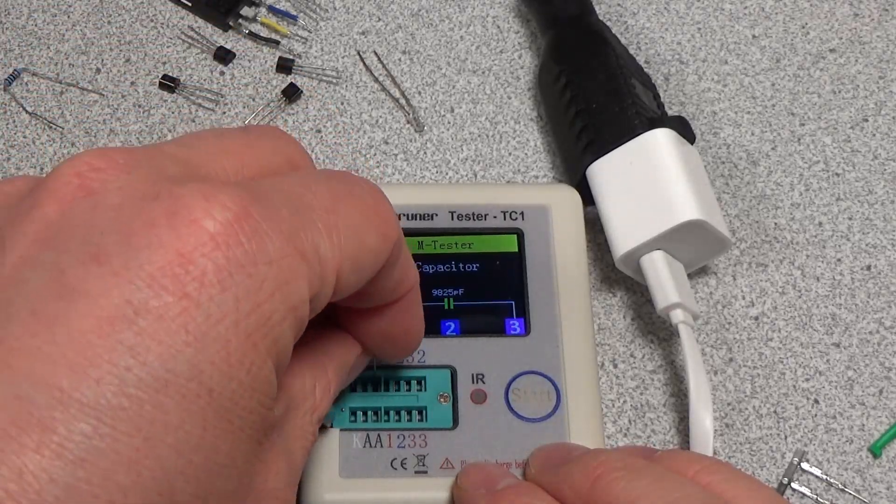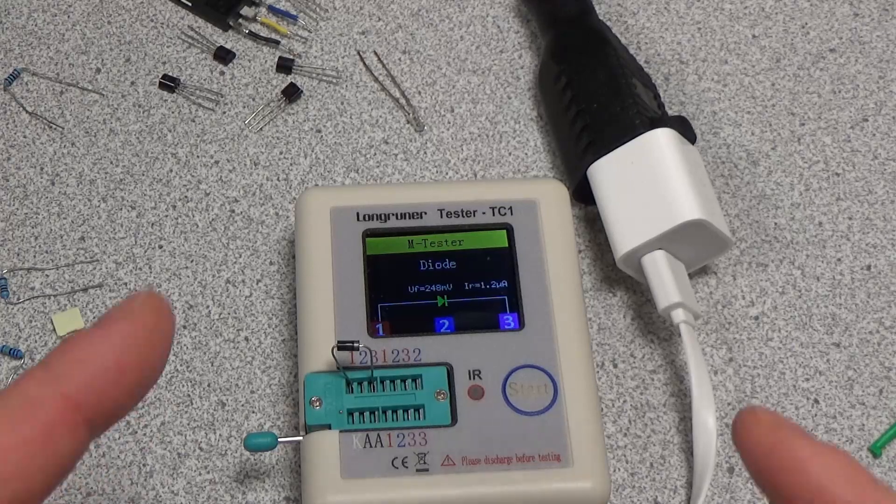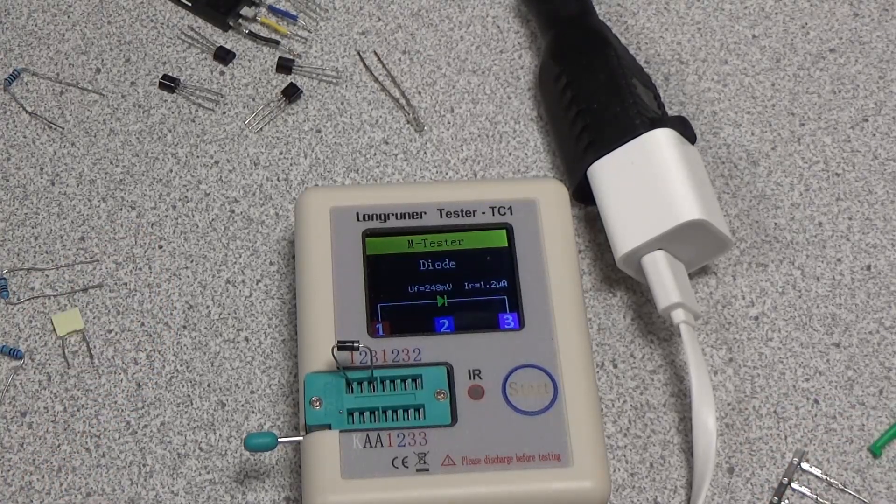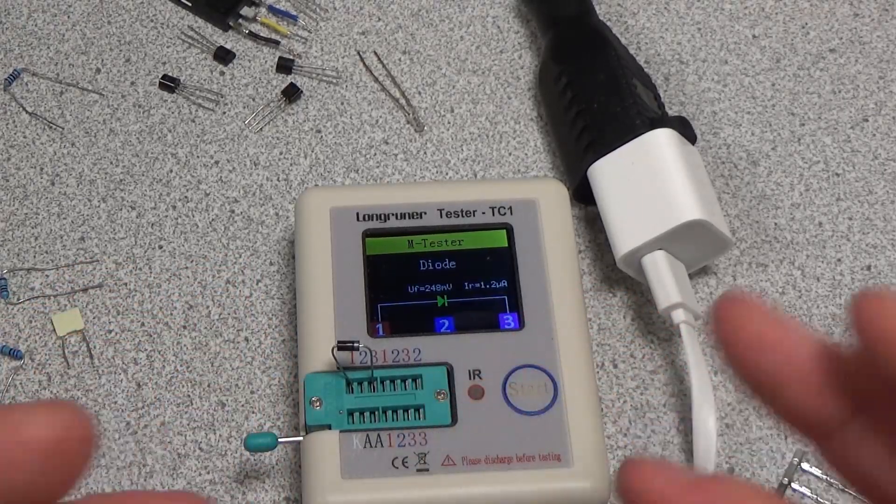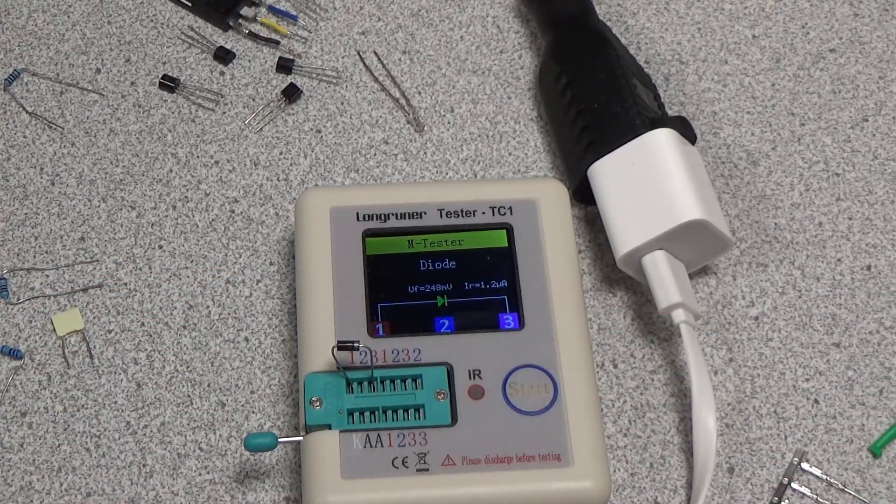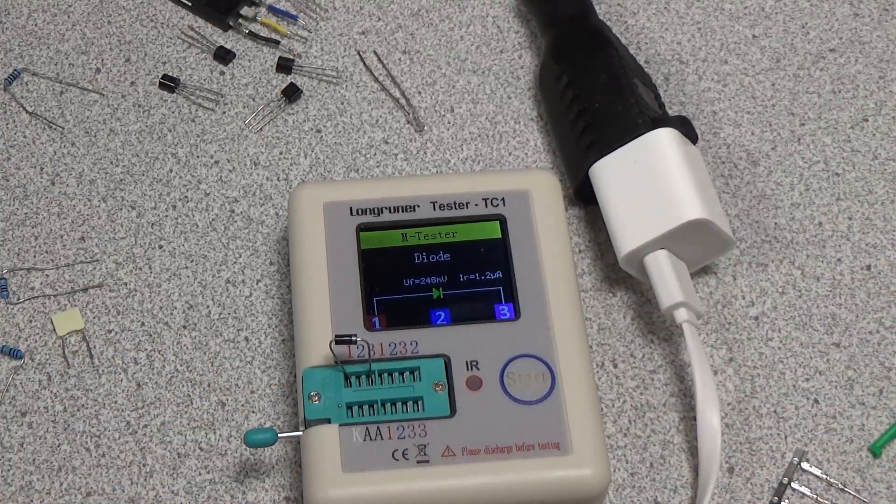Here's another diode. This is just like a regular rectifier diode. That's a Schottky diode, 248 millivolts. So you can see the components look like something on the outside and I'm just guessing what they are, and sometimes they aren't. And this thing susses out what they actually are really fast without having to read the label.